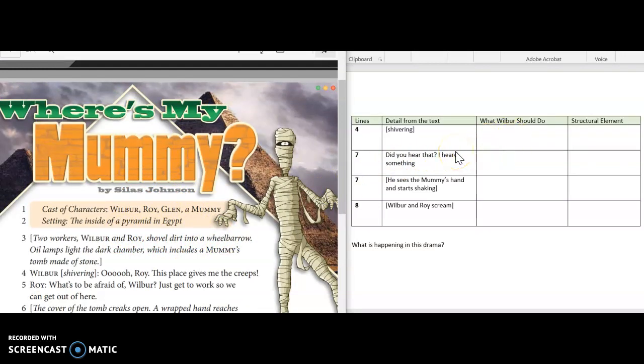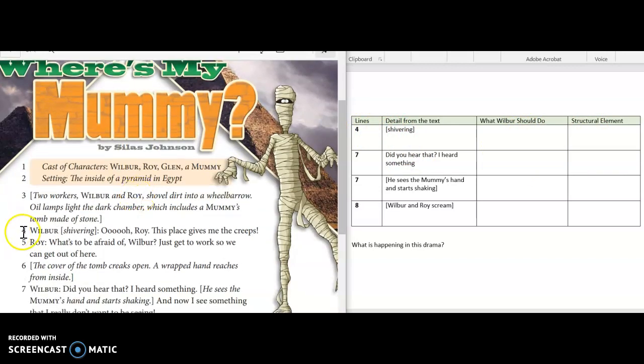So now we're going to take a look over here at this split screen on the side. I'm going to focus in on lines four, seven and eight, and I'm given these details from the text. I have to decide what Wilbur should be doing and then identify the structural element. Let's look at line number four right here. The detail that they want us to focus on is shivering. So what should Wilbur do? Well if I'm the actor on stage and it says 'Wilbur shivering ooh Roy this place gives me the creeps,' then what should I do while I'm acting on stage? Wilbur should act scared. Now what is this structural element called? This is referred to as stage directions.